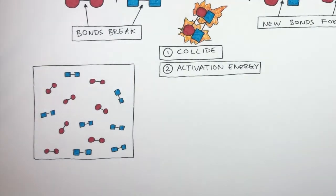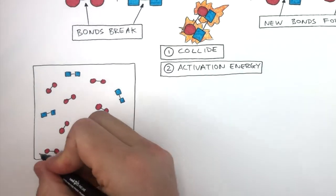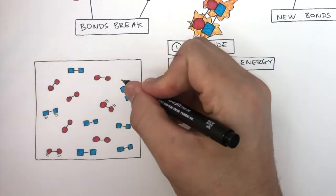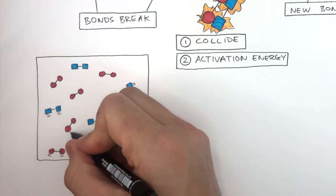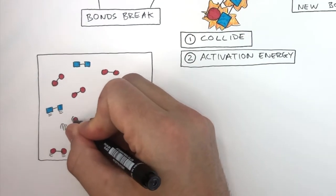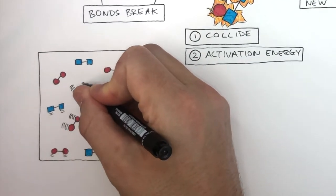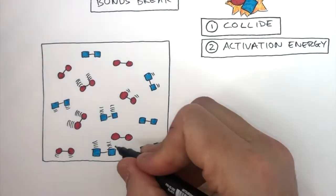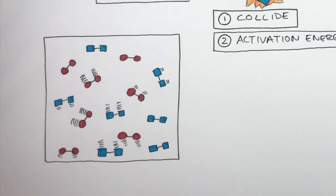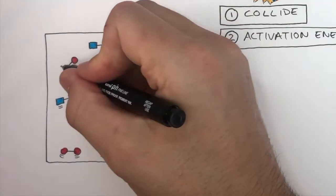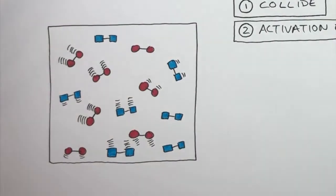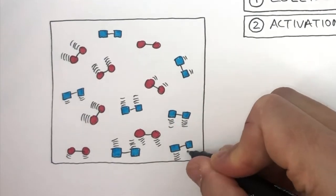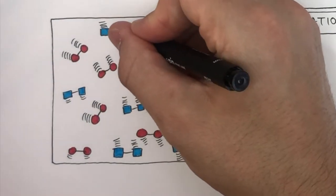In this chemical reaction, we can see how the reacting particles have different amounts of energy, as shown by the movement lines. Where there are more movement lines, they have more energy; where there are fewer movement lines, there is less energy. This is very normal — some reacting particles will have the activation energy and some will not.